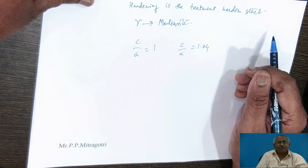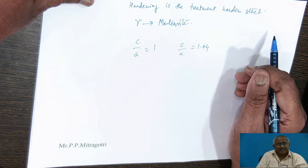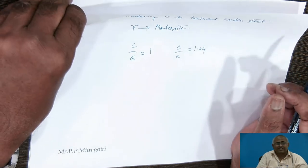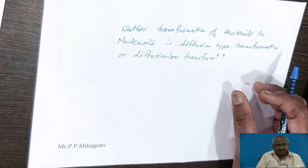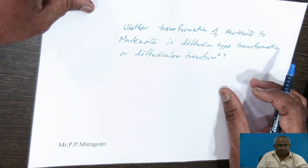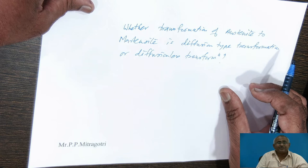This transformation does not involve nucleation and growth — it differs from the transformation of austenite to a ferrite-cementite mixture such as pearlite or bainite. At this point, I will pose a question: is the transformation of austenite to martensite a diffusion-type transformation or a diffusionless transformation, and why? If it is a diffusionless transformation, why is it so?